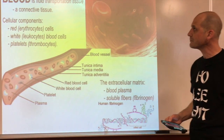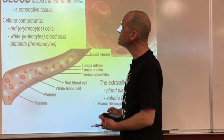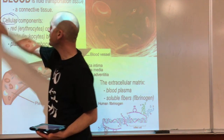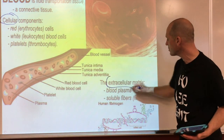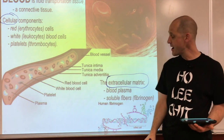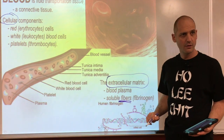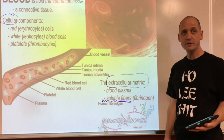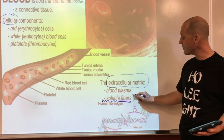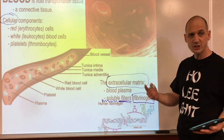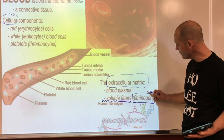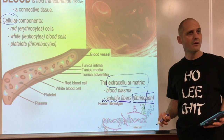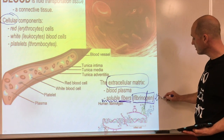Blood is a fluid transportation tissue - it's a connective tissue. It has cells and an extracellular matrix. An extracellular matrix always has fiber; in blood it's not visible fiber, it's called soluble fiber - you can dissolve it in liquid. We call that fiber fibrinogen. The word 'gen' usually comes from genesis, meaning creation.